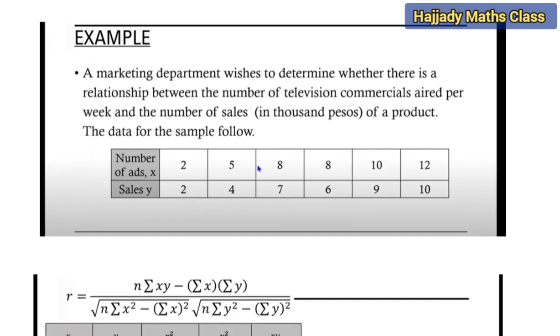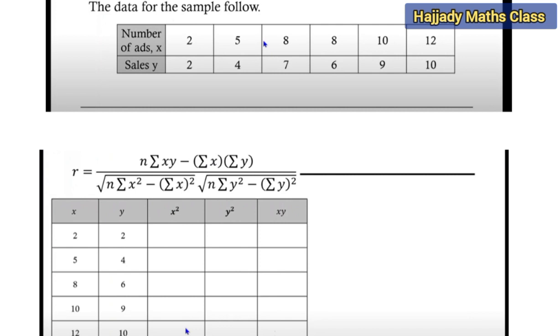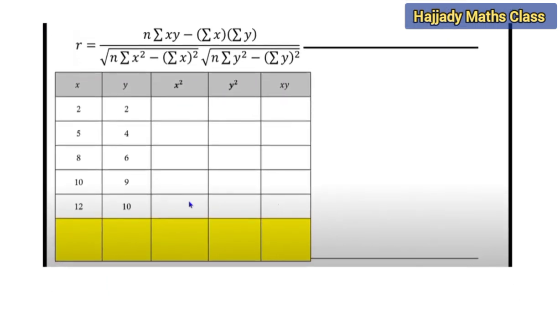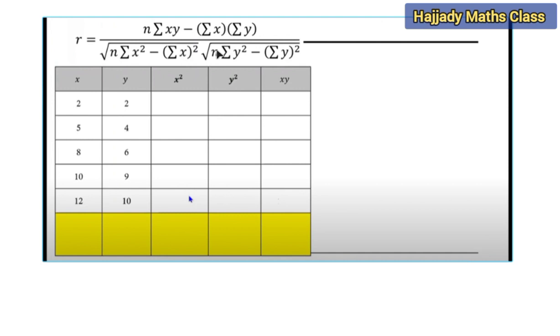Now, example. A marketing department wishes to determine whether there is a relationship between the number of television commercials heard per week and the number of sales in thousands of pesos of a product. So the data for the sample follow. We have the number of ads, which is our x, and the sales, which is y. So we want to compute the correlation coefficient.